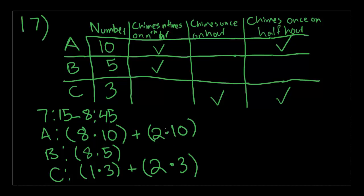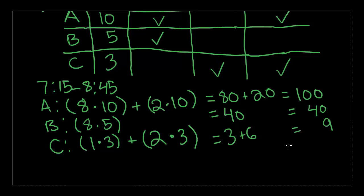Let's solve it. 8 times 10 is equal to 80 plus 2 times 10, which is equal to 20. 8 times 5 is equal to 40. And 1 times 3 plus 2 times 3 is equal to 3 plus 6. So this is equal to 100. This is equal to 40. This is equal to 9. And therefore, our answer is a total of 149 chimes. And that's the correct answer. And I would say that shop is pretty loud considering the amount of chimes.